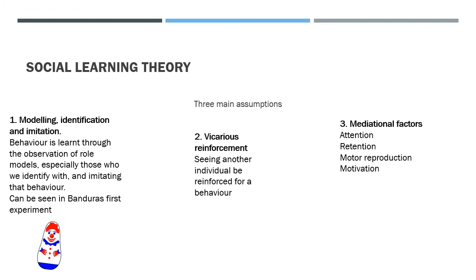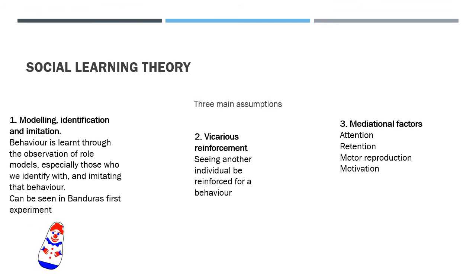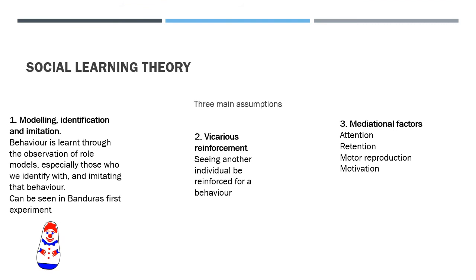The third factor is mediational factors, which include: attention — you must pay attention to the behaviour; retention — you must remember how to do it; motor reproduction — you must have the physical ability to perform it; and motivation — you must have the drive and desire to replicate it. These are the three assumptions of social learning theory.